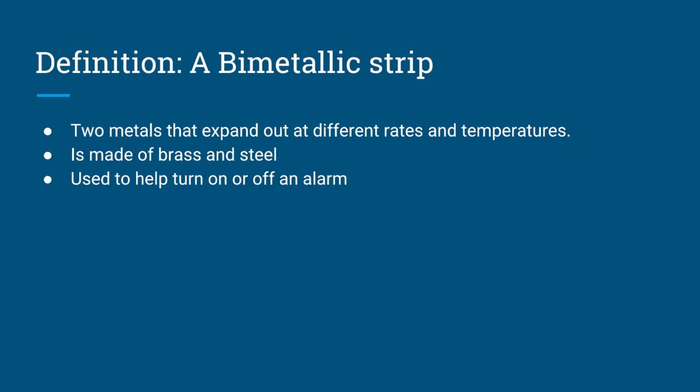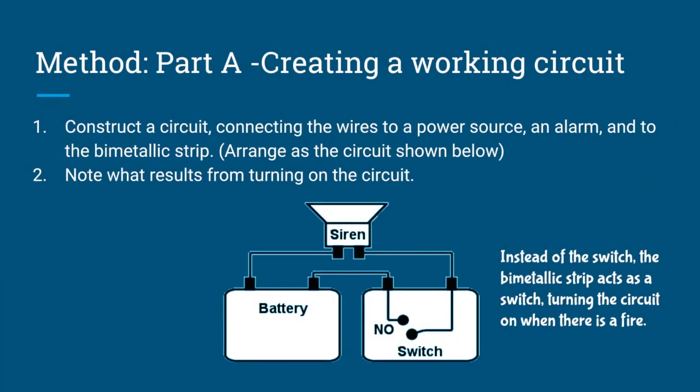Method Part A - Creating a working circuit. Step 1: Construct a circuit connecting the wires to a power source, an alarm, and to the bimetallic strip. Arrange as the circuit shown below.